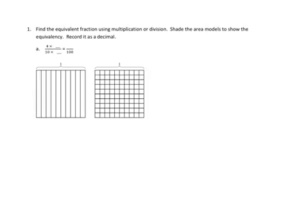Problem number one asks us to find the equivalent fraction using multiplication or division. Shade the area models to show the equivalency and record it as a decimal. So we have what starts off as four tenths, and we are going to multiply the numerator and denominator by some number, and we are going to end up in hundredths. Let's start with the four tenths, because our model is set up here first in tenths. I'm going to go ahead and shade in four tenths. There's four tenths.